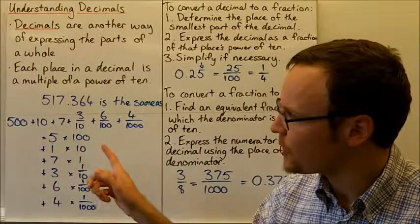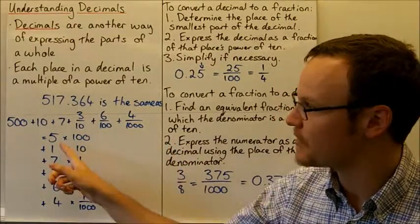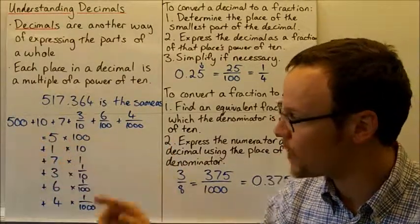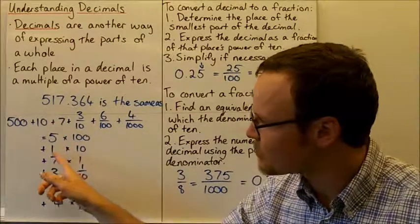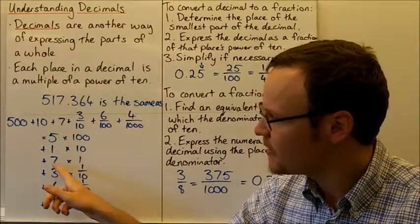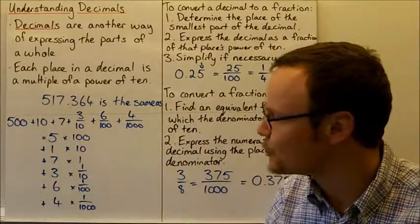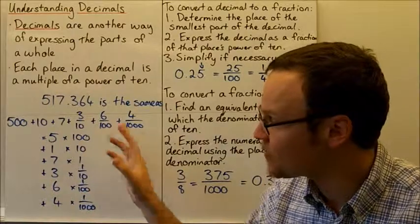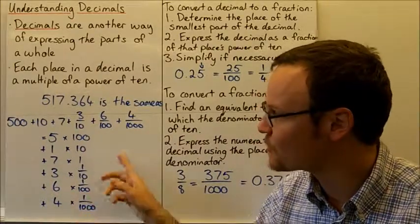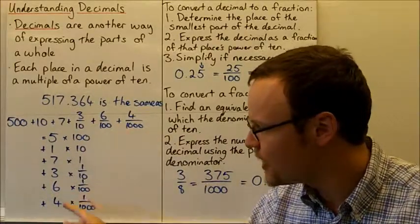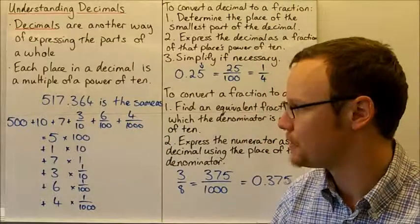We can see that each part is a multiple of a power of 10: five lots of 100, one lot of 10, seven units, three lots of one-tenth, six lots of one-hundredth, and four lots of one-thousandth.